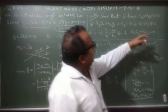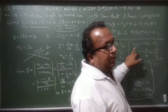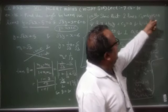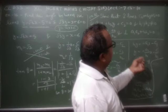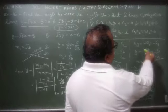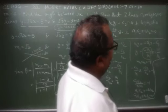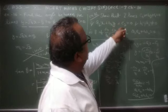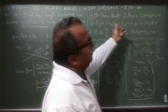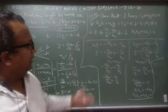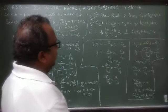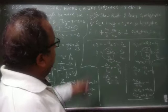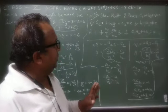पहली line को slope intercept form में change किया। b1y को right side transfer किया — negative हो गया। फिर b1 से divide किया। इसका slope m1 = -a1/b1 हो गया। इसी तरह दूसरी equation को भी slope intercept form में convert किया — m2 = -a2/b2।